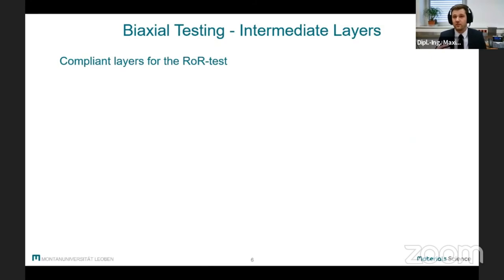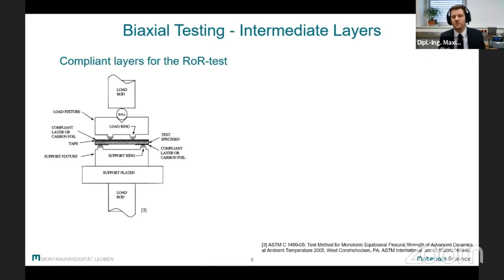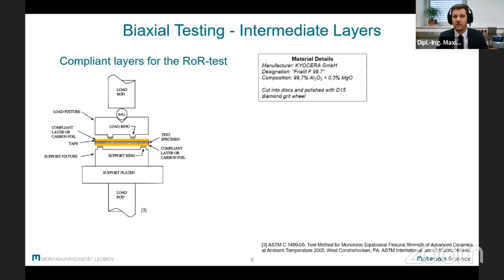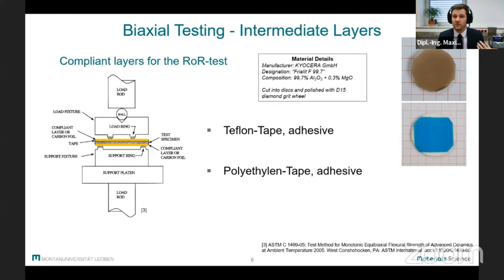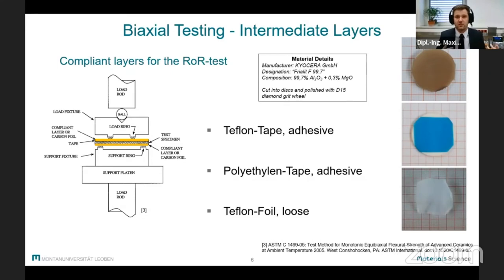So a specialty of the Ring-on-Ring test is that usually some sort of intermediate layers or lubricants have to be used. Their main purpose is to reduce friction and they're usually utilized on both sample sides. For our work, we used commercially available alumina with three different intermediate layers. We used an adhesive Teflon tape and an adhesive polyethylene tape, and both of them were only applied on the compression loaded side in order to have as little influence on the strength results as possible. That's why they were always used in combination with a loose Teflon foil for the tension loaded side.